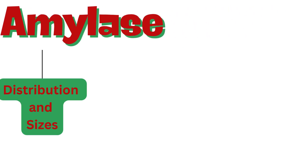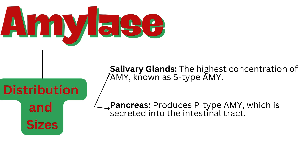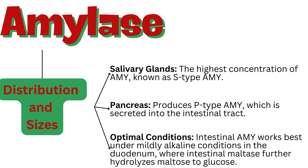Amylase is distributed throughout the body with notable concentrations in certain organs. Salivary glands have the highest concentration of AMY, known as S-type AMY. The pancreas produces P-type AMY, which is secreted into the intestinal tract. Intestinal AMY works best under mildly alkaline conditions in the duodenum, where intestinal maltase further hydrolyzes maltose to glucose.